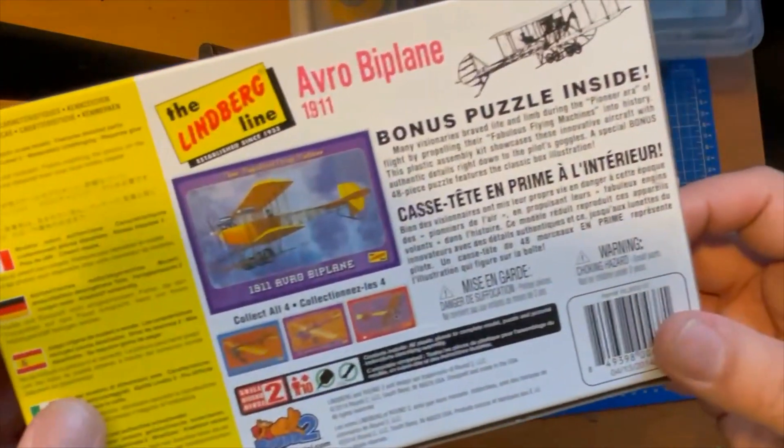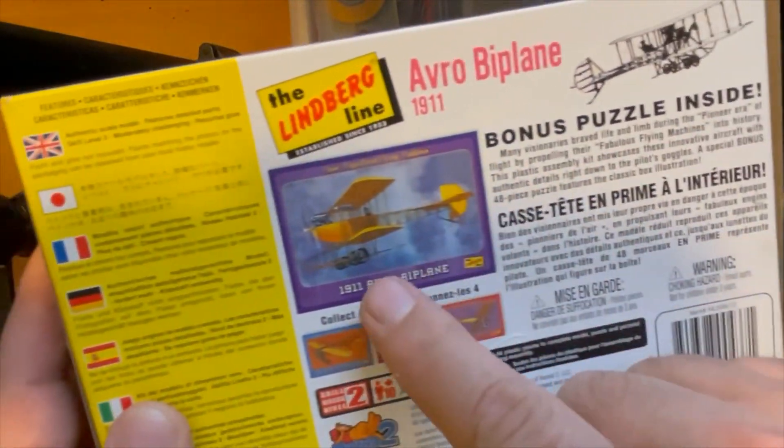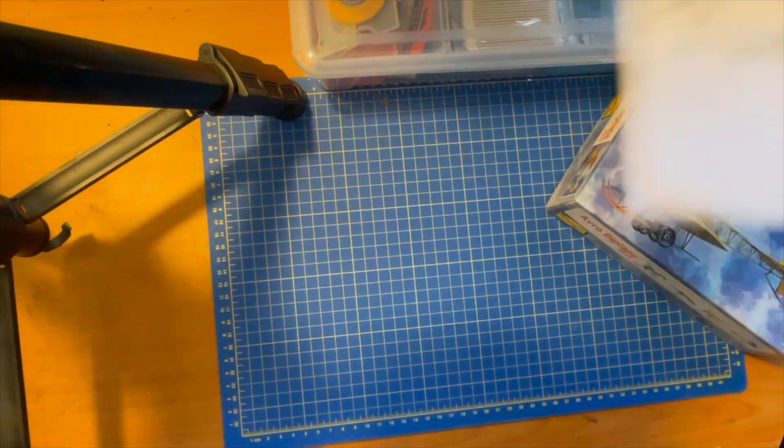This model kit gives you a puzzle inside. I put that puzzle together, did the glue thing, and it's hanging on a wall. But let's take a look, here's the instruction booklet.